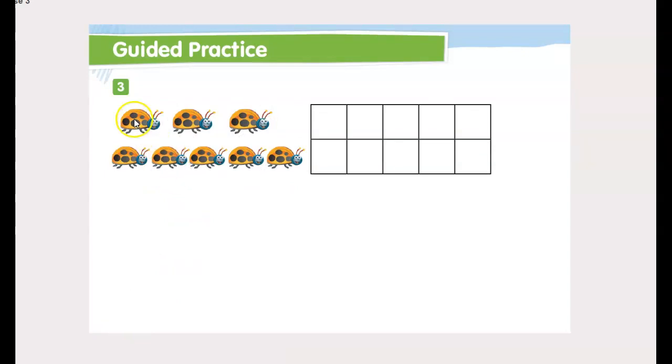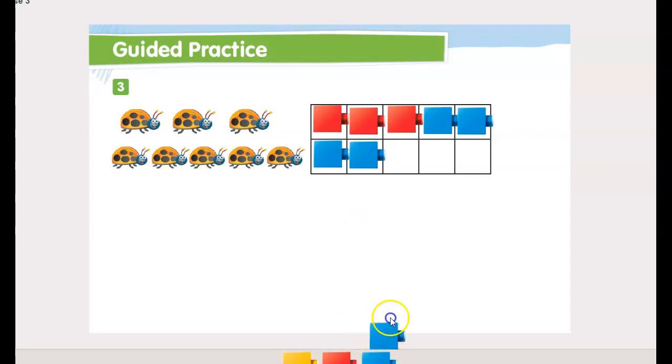Okay, let's count the bugs: 1, 2, 3, 4, 5, 6, 7, 8. Okay, so there's 3 bigger ones and there's 5 smaller ones. So I'm going to use my cubes again. And I'm going to put 3 red for my bigger ones. Then I'm going to use blue for my smaller ones. So this is a little different this time. So now I have 3 red and 5 blue. But 3 and 5 make 8. 5 and 3 make 8.